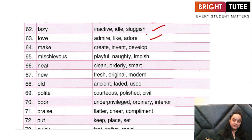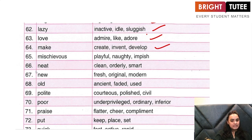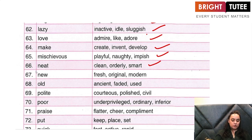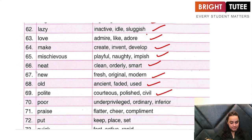'Make' — is create, invent, develop. 'Mischievous' — is playful, naughty, impish. 'Neat' — is clean, orderly, smart. 'New' — is fresh, original, modern. 'Old' — is ancient, faded, used. 'Polite' — courteous, polished, civil. 'Poor' — is underprivileged, ordinary, or inferior.